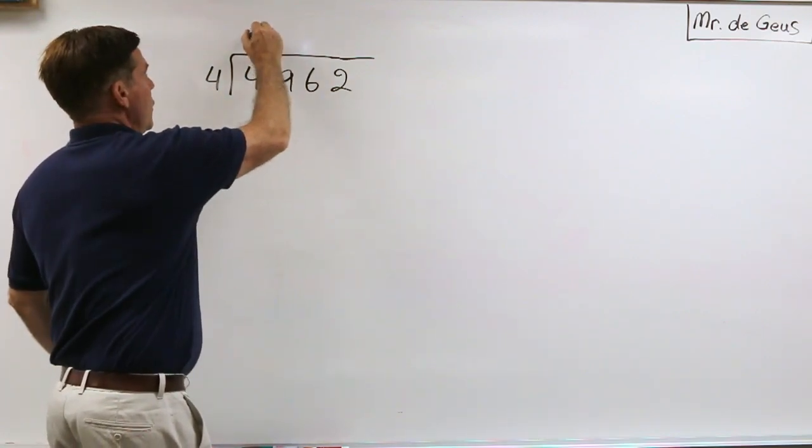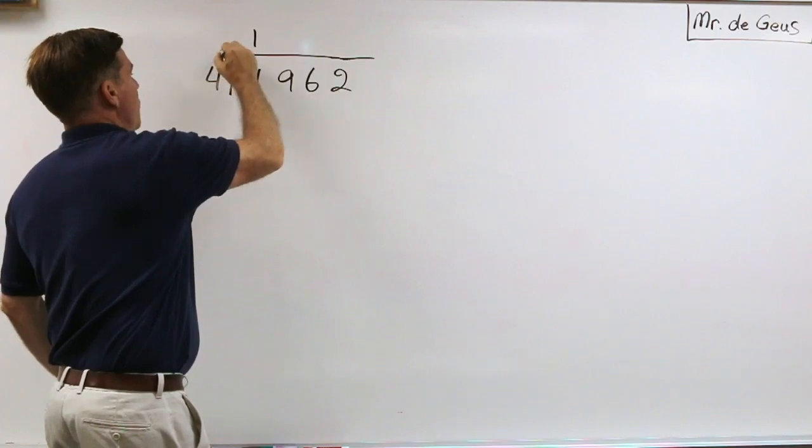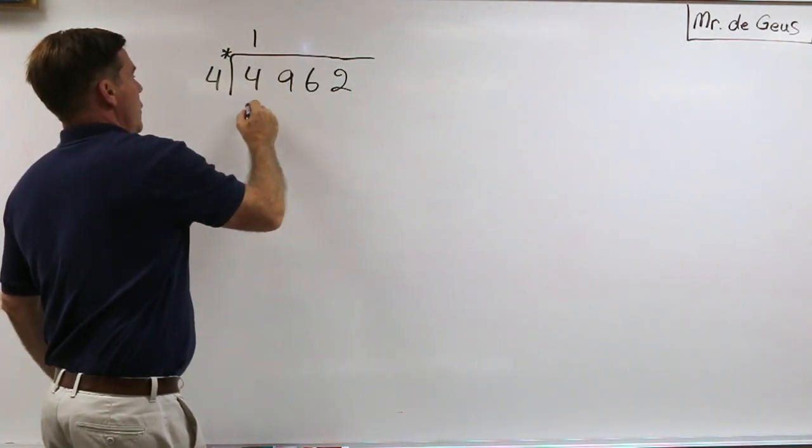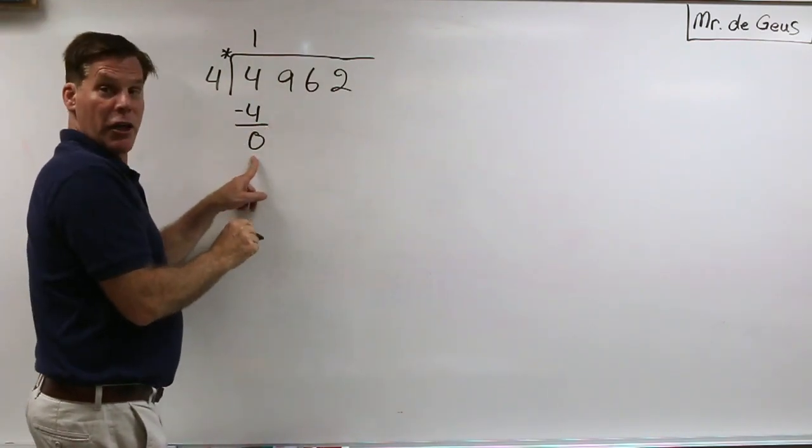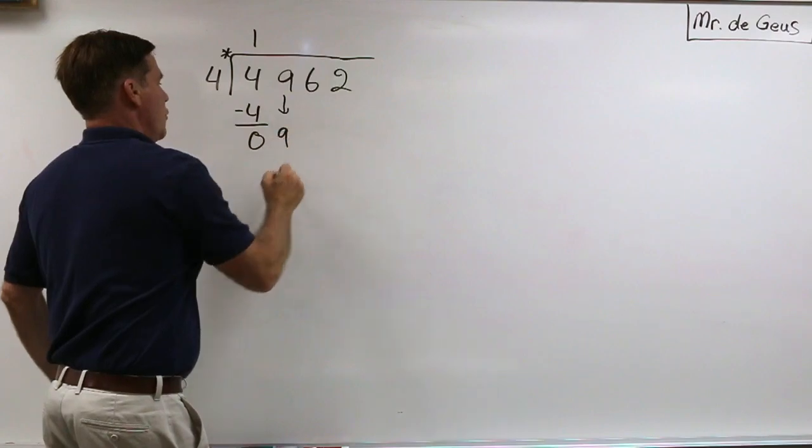Alright, so 4 goes into 4 one time. Remember, we are multiplying from here to here to get our answer, so that's a 4. Now looks like it's taken care of right there. We're going to go ahead and bring down the next number which is the 9.